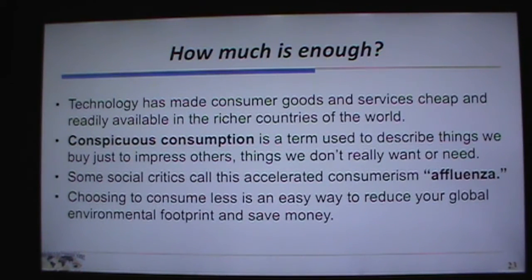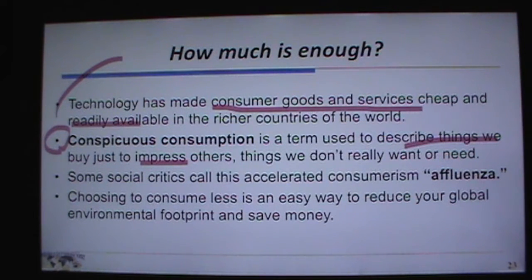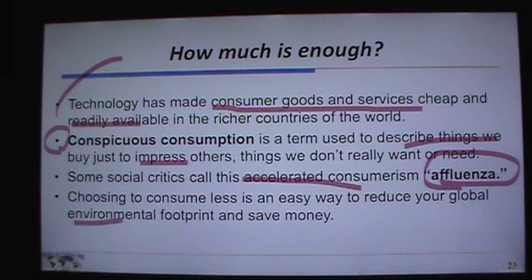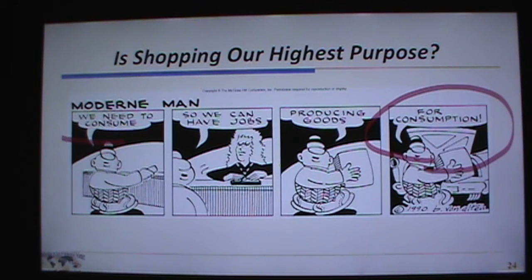How much is enough? Technology has made consumer goods cheap and readily available, mostly in richer countries. The idea of conspicuous consumption describes things we buy just to keep up with the Joneses — things we don't really want or need. Critics call this accelerated consumerism 'affluenza.' Choosing to consume less is an easy way to reduce your environmental footprint and save money.